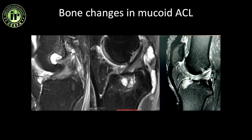In mucoid degeneration, as already discussed, there is accumulation of mucinous material which tends to take the path of least resistance. Sometimes when the ligament itself provides a lot of resistance, this mucinous material enters into the bone, and hence what you get is intraosseous cystic changes. This patient has intraosseous cystic changes at the femoral attachment; here it is at the tibial attachment; and this patient predominantly has small cystic changes along with marrow edema at the tibial attachment of the ACL. When mucoid degeneration or accumulation of mucinous material happens rapidly, it enters the bone rapidly and there is no time for development of a cyst.